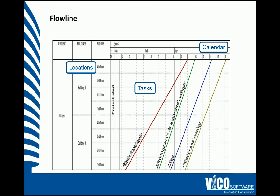Each task is made up of the subcomponents that we assigned in the task manager. This means that each task comprises of a quantity, and because we are going to load them with a crew, and because we've assigned a productivity factor, we know that this is a summation of the entire duration for that task.